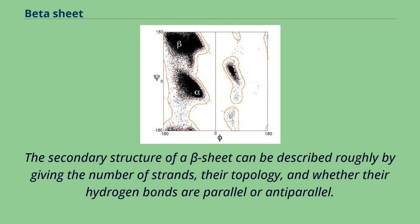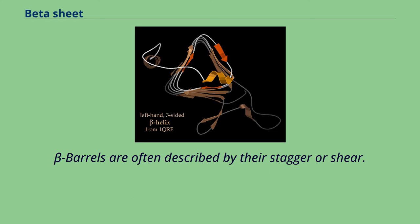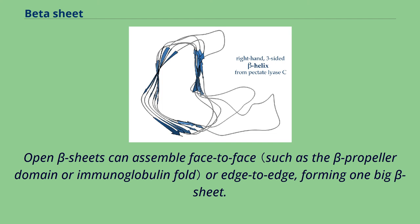The secondary structure of a beta sheet can be described roughly by giving the number of strands, their topology, and whether their hydrogen bonds are parallel or anti-parallel. Beta sheets can be open, meaning that they have two edge strands, or they can be closed beta barrels. Beta barrels are often described by their stagger or shear. Some open beta sheets are very curved and fold over on themselves or form horseshoe shapes. Open beta sheets can assemble face-to-face or edge-to-edge, forming one big beta sheet.